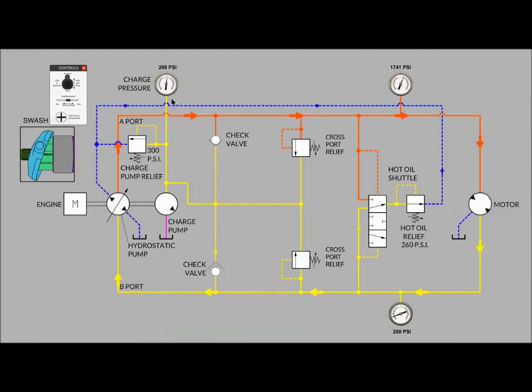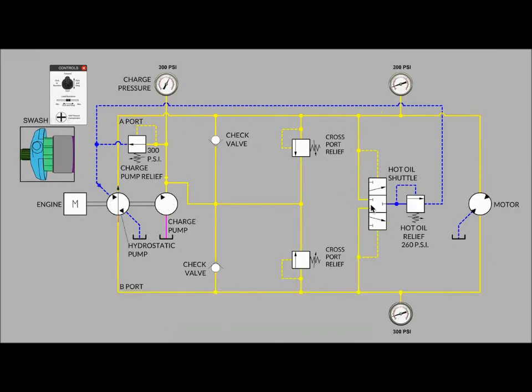So that is why the charge pump pressure gauge reads 260 psi and not 300 for this particular system, when the lever that adjusts pump displacement is forcing the pump to put out a displacement in this case on the main A side of the loop. I hope that makes sense. It's about the path of least resistance. It's either the hot oil relief valve that is the lower path of resistance when the shuttle is in position to bleed flow out of the loop, or it's the charge pump relief valve that is the path of least resistance when the hot oil shuttle is back in center position.